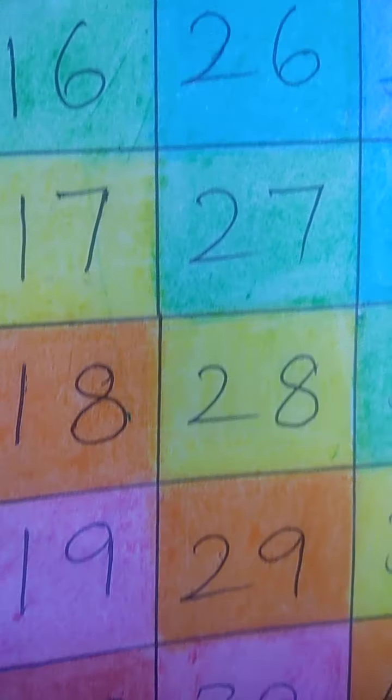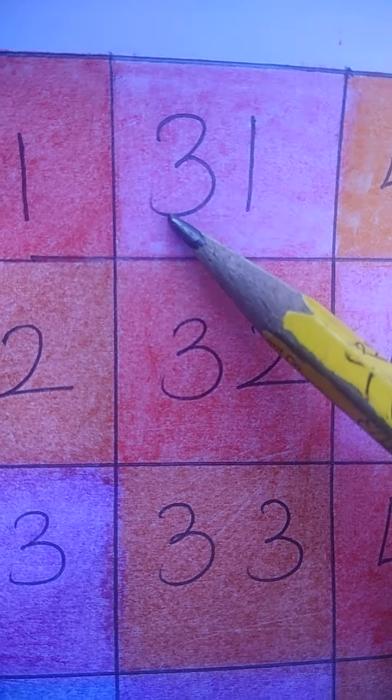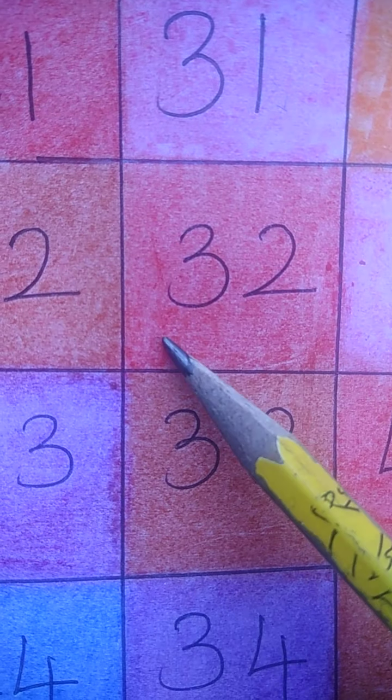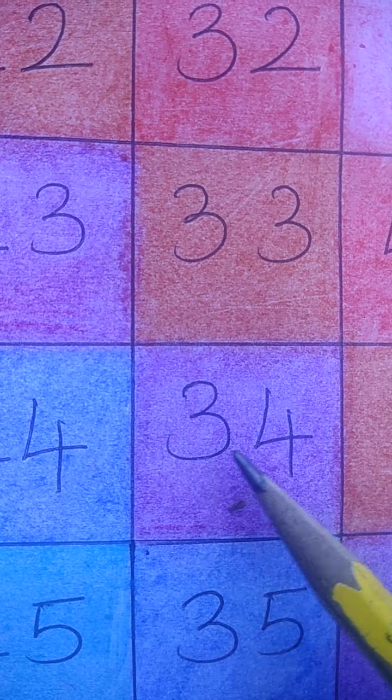3 0 30. Then 30 after 31, 3 1 31, 3 2 32, 3 3 33, 3 4 34.